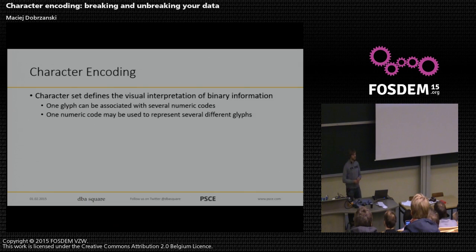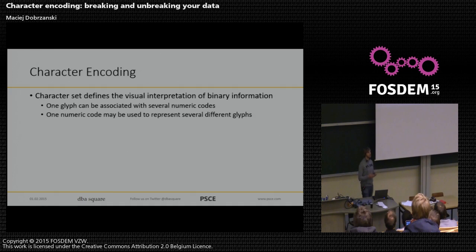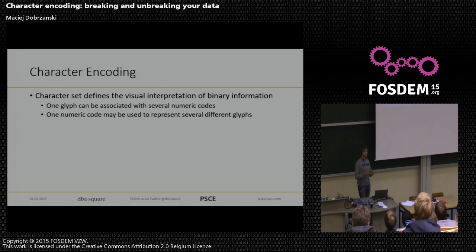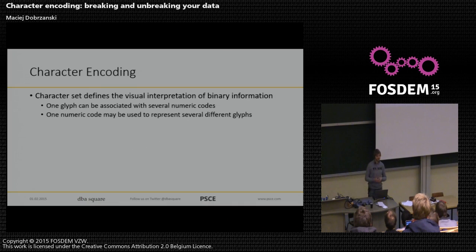A character set is the context that defines what each character code means and what it becomes when printed on screen or a printer. When that context is lost, we can no longer tell what a specific code means — is 65 an 'A', a question mark, or an exclamation mark? The character set defines that for us, and if we mix up the character set, we are most likely unable to figure it out anymore.